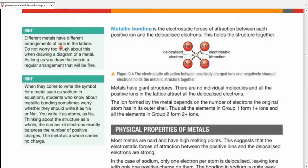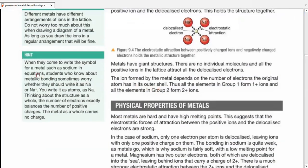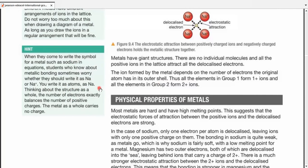Now, different metals have different arrangements of ions in lattice. Don't worry too much about this when drawing a diagram of the metal. As long as you can draw the ions in regular arrangement, that will be fine. One more hint. When they come to write the symbol for a metal, such as sodium in equations, students who know about metallic bonding sometimes worry whether they should write it as sodium or sodium ions. You write it as atoms.